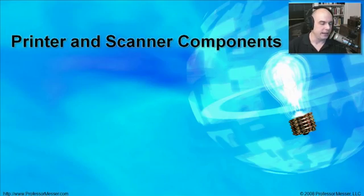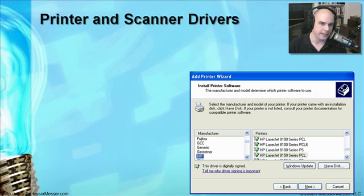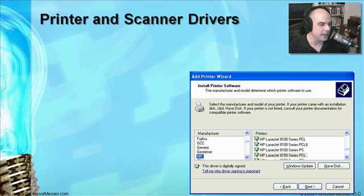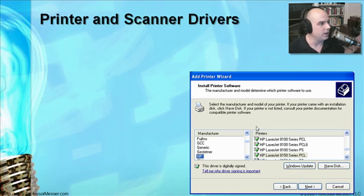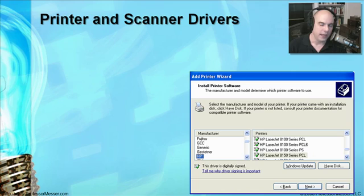Let's start with understanding more about the components of printing and scanning. One of the things that you'll run into when you first install a printer is needing to have the proper drivers. We see this from time to time where we have printer and scanner drivers that we're installing. This is the Add Printer Wizard inside of Windows, and what we're doing is installing the capabilities that our computer will use to talk to our printer.